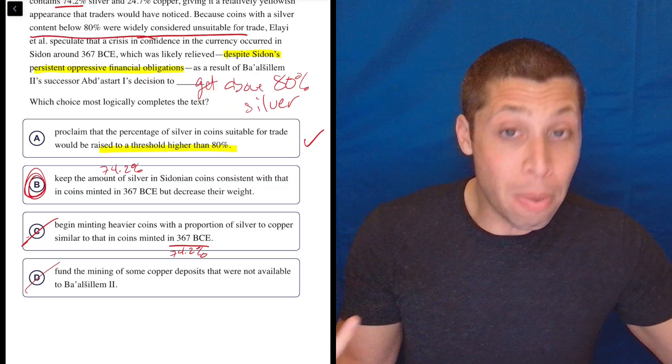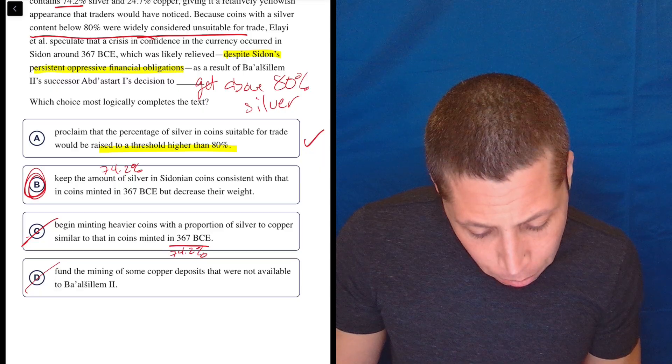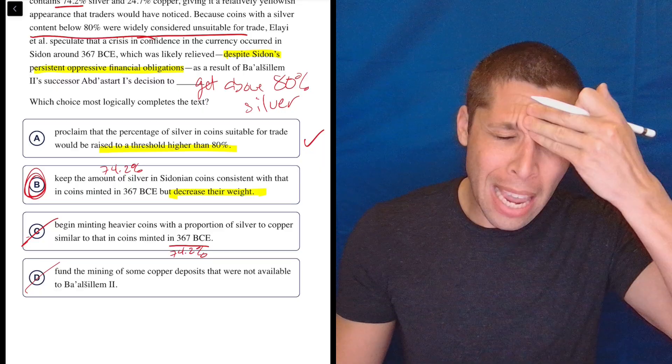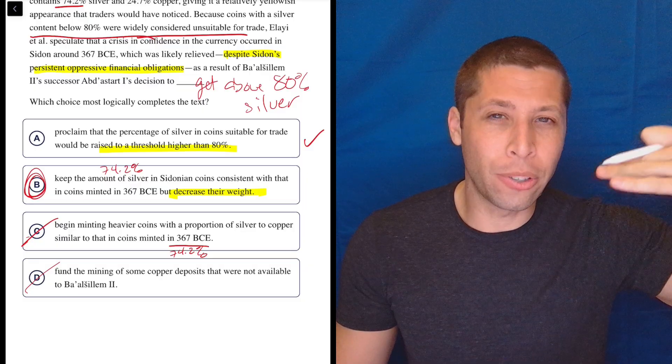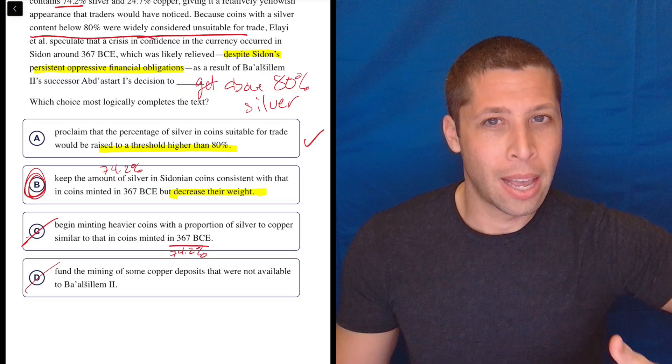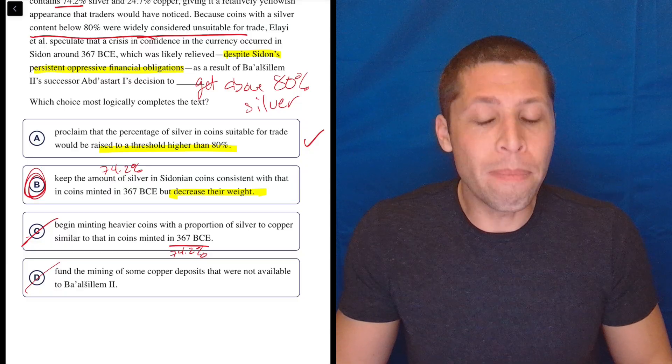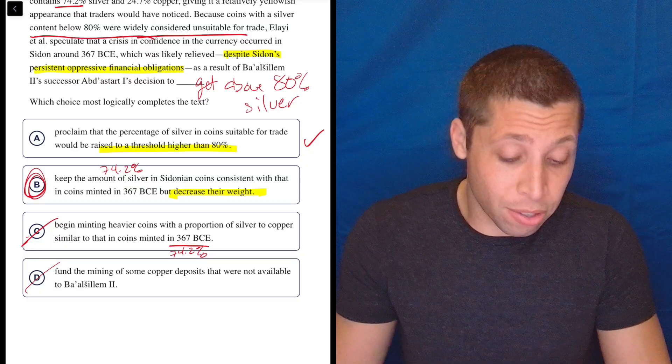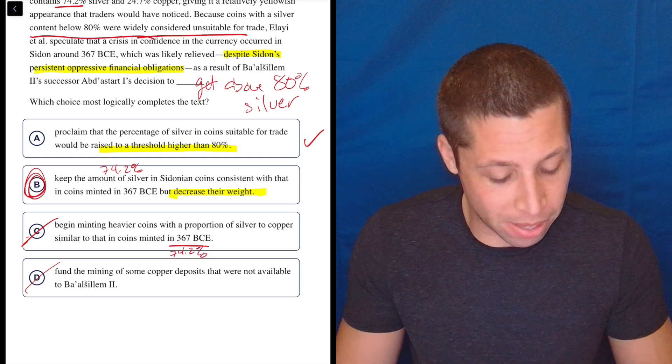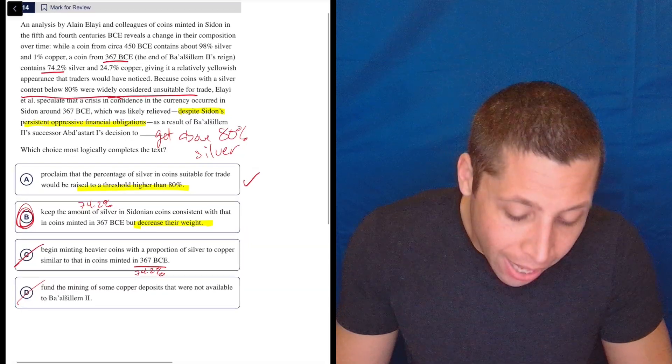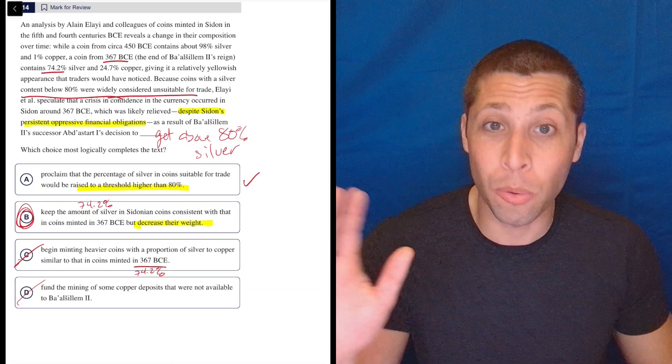Or at least something about A implies that we're going to somehow fix this problem by spending more money, by putting more silver in it or something. And they don't have the ability to do that because like I said, they're broke. Whereas B, according to the College Board, is going to somehow solve that problem because they're able to do it by decreasing the weight. And so you're able to somehow save the currency and also save money at the same time. So to me, this is a huge leap. Again, I think this question is wrong.